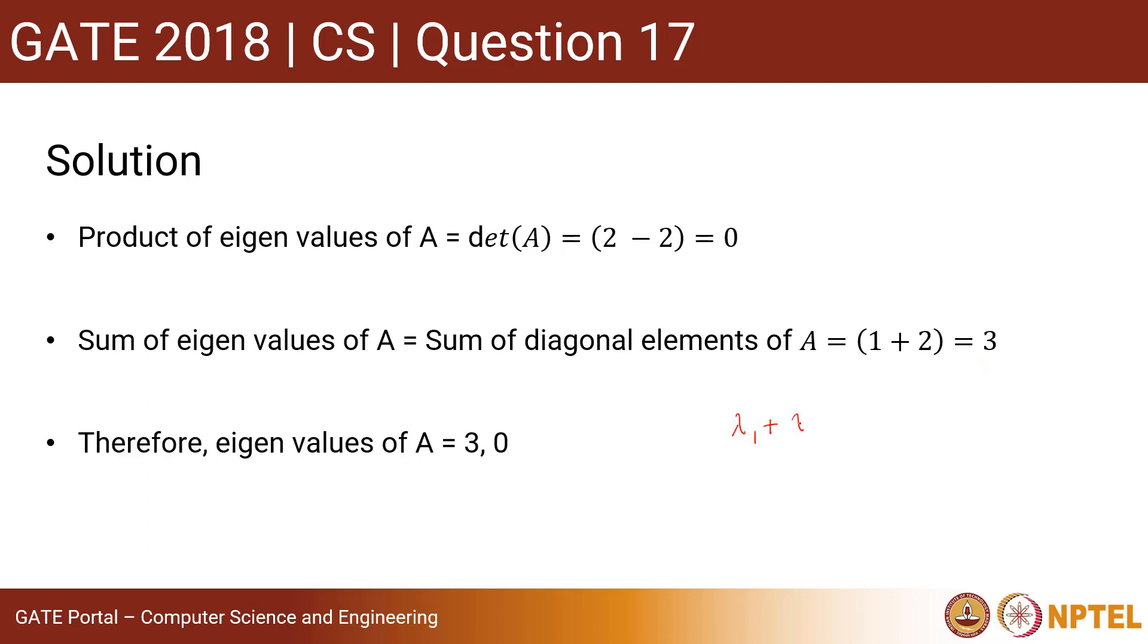Sum of two eigenvalues here is 3 and the product of two eigenvalues is 0. Now, at least one eigenvalue should be 0 to get the product as 0.